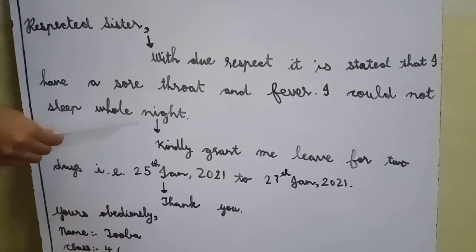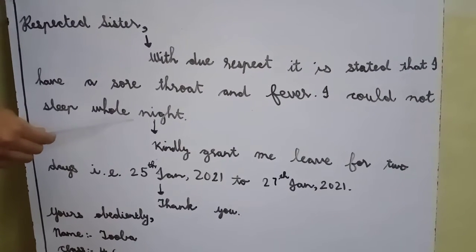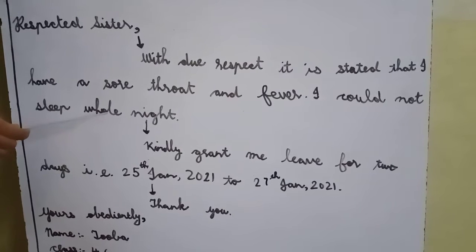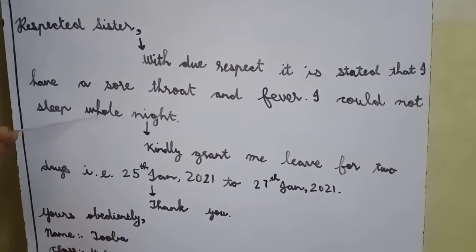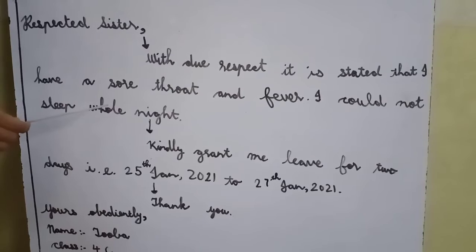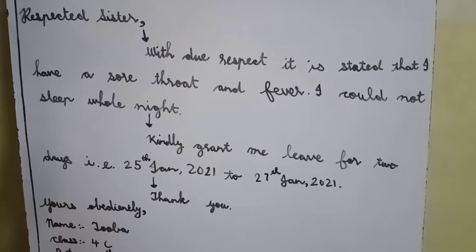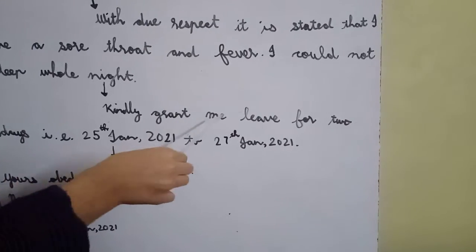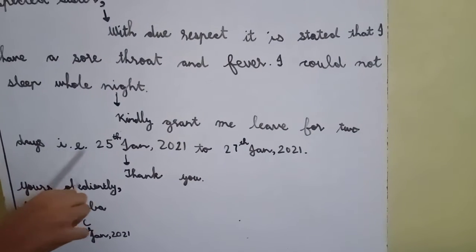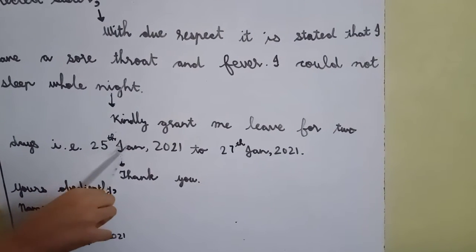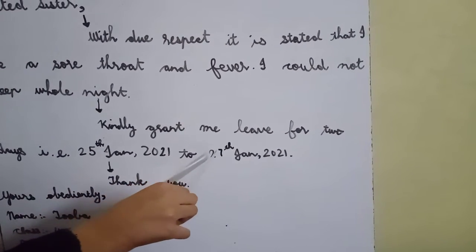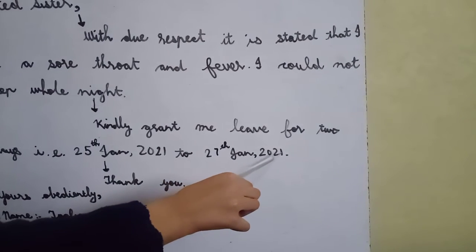We will start our second paragraph. Before that, we will again mark an arrow — that is to keep our paragraph in sequence. Kindly grant me leave for two days, that is 25th January 2021 to 27th January 2021.